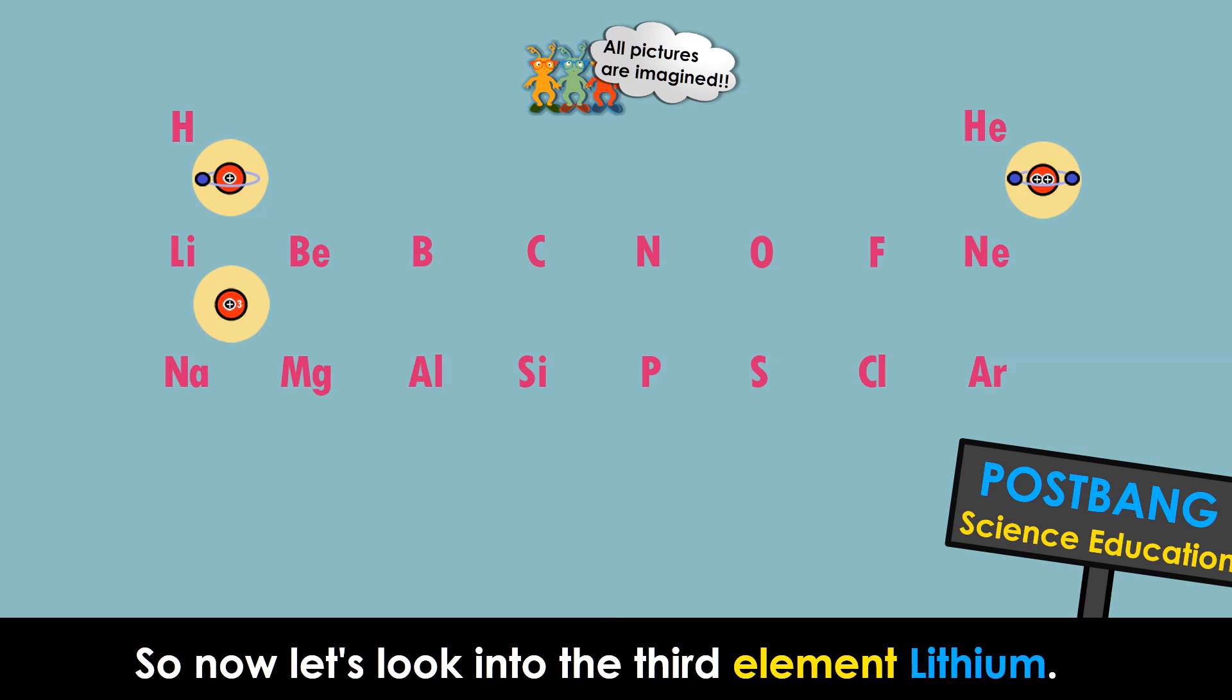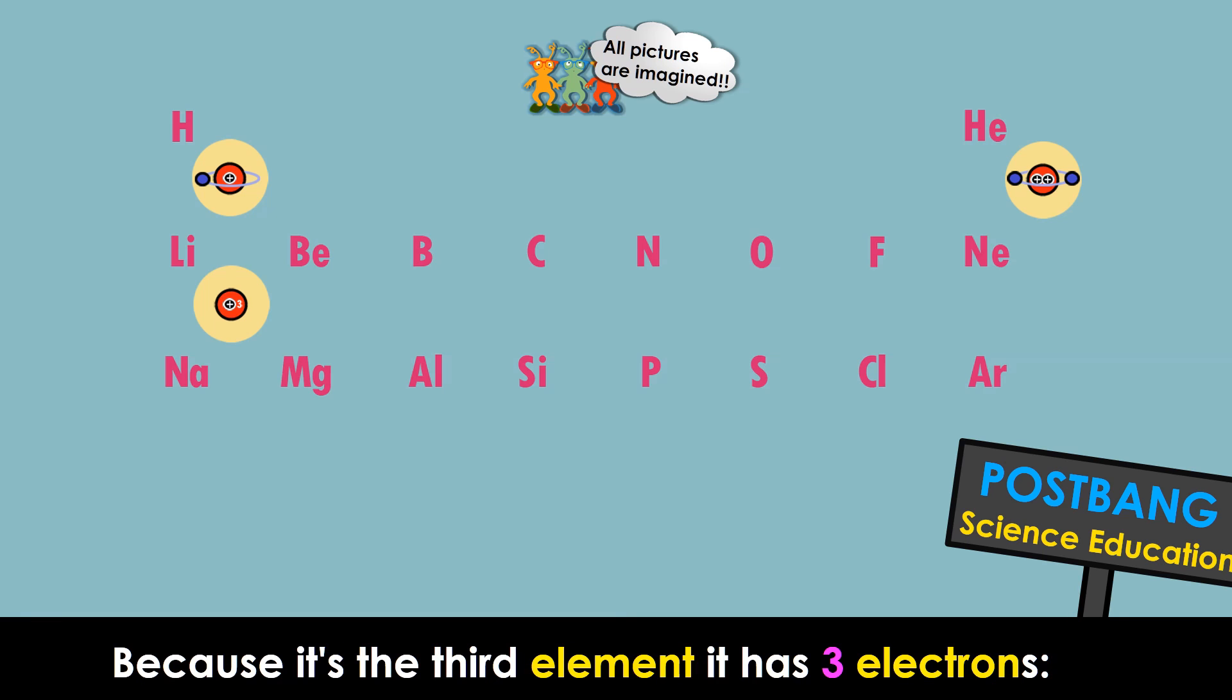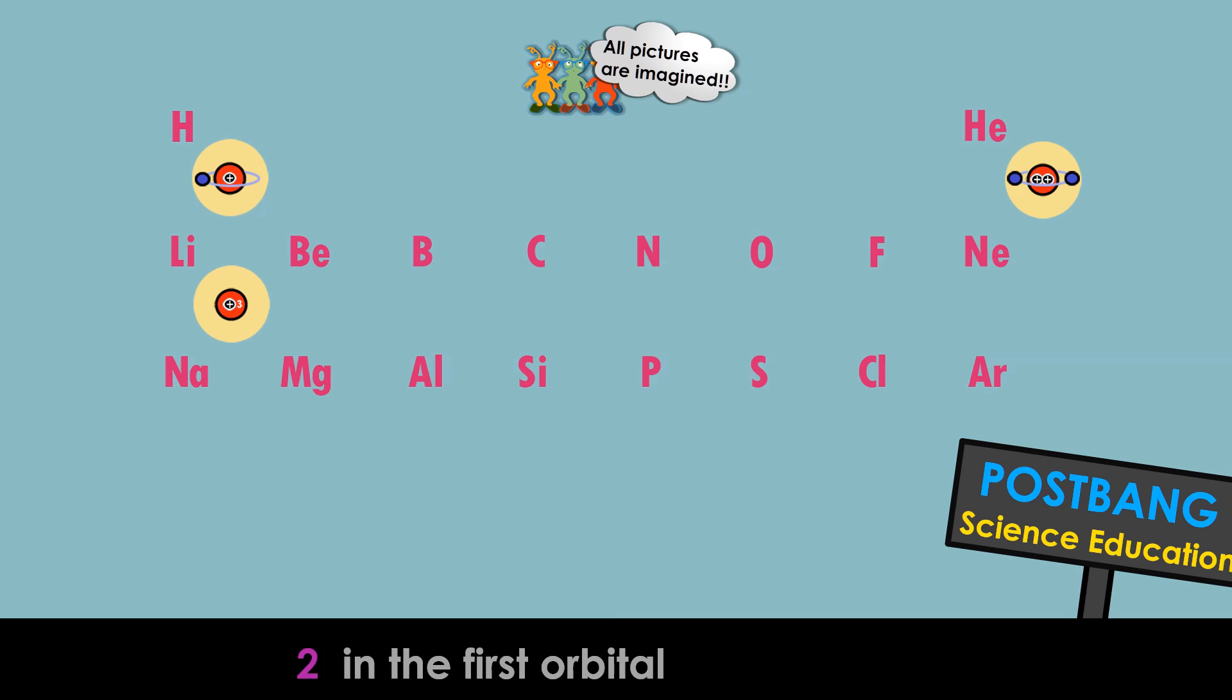So now let's look into the third element, lithium. Because it's the third element, it has three electrons. Two in the first orbital and one in the second orbital.